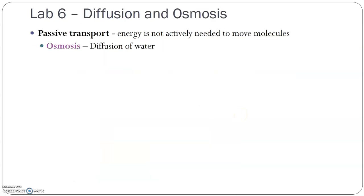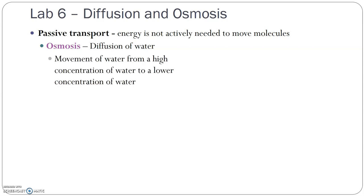The other passive transport you are going to be working with in this lab is the passive transport of water. Osmosis is the diffusion of water — it is the movement of water down its concentration gradient. When we look at living things, we usually think about the solute inside the water rather than the amount of water itself. Water is the solvent, and the solute is the molecule we're looking at. Osmosis is driven by how much water is present, but we typically think about where the solute is higher versus lower.